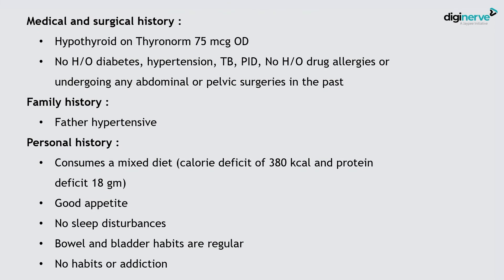Family history: her father is hypertensive. Personal history: she consumes a mixed diet, good appetite, no sleep disturbances, regular bowel and bladder habits. No habits or addictions. Personal history is not significant.